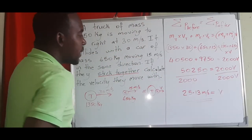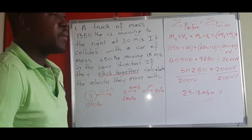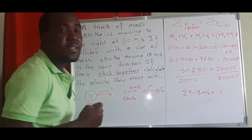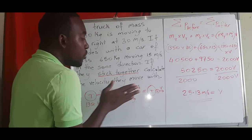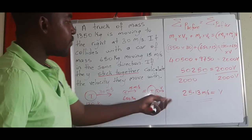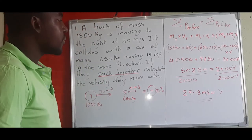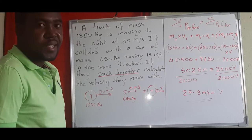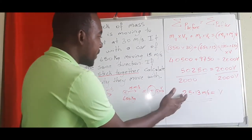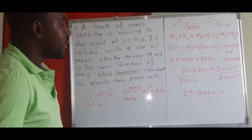We get v equals approximately 25.13 meters per second. The positive value of v tells us that both objects move to the right after the collision. So if the question asked for the direction, the answer would be to the right.